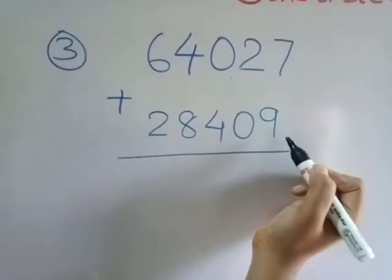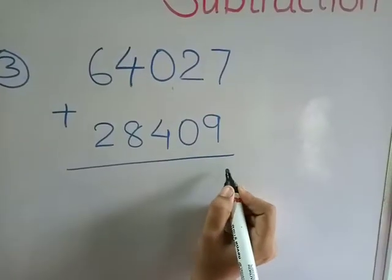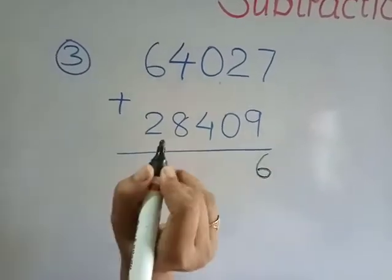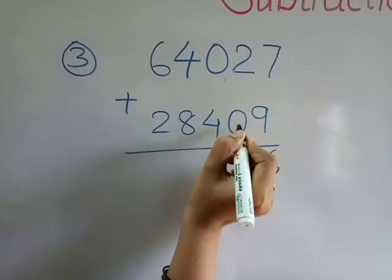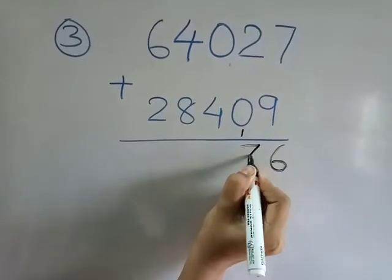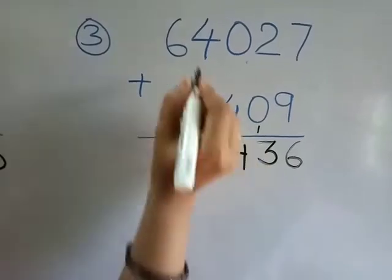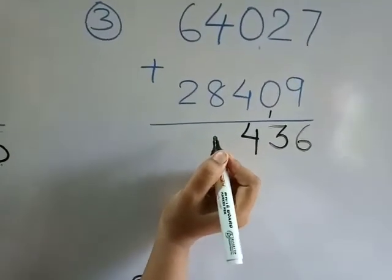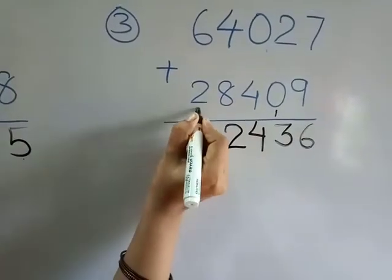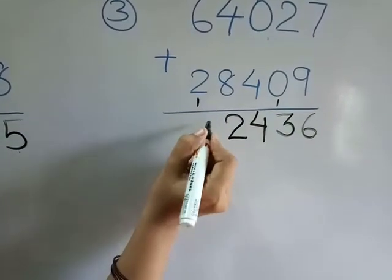Seven plus nine — how many is seven plus nine? Sixteen — very good. Six right here and one is carry. Two plus zero is equal to two, plus carry one is equal to three. Zero plus four is equal to four. Four plus eight — how many is four plus eight? Twelve. Write two here and one is carry. Six plus two is equal to eight, eight plus carry one is nine.